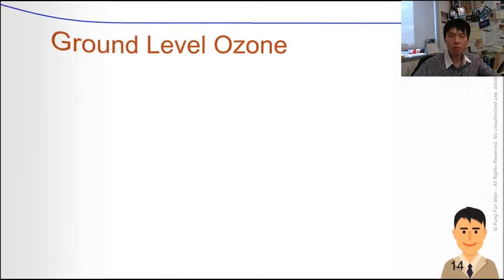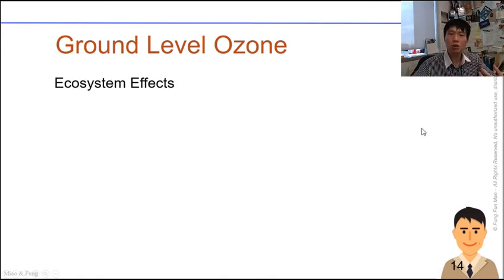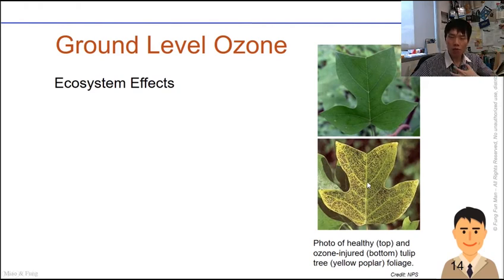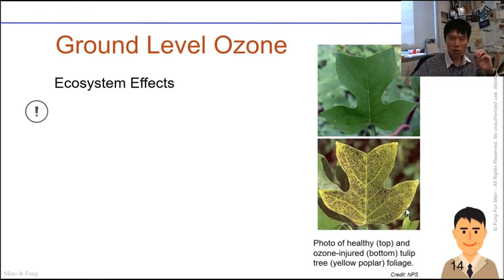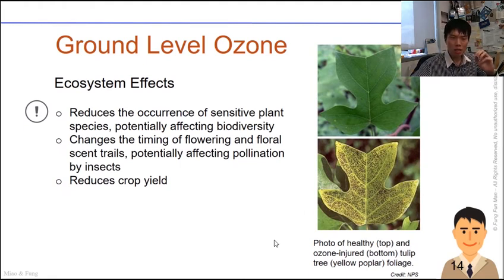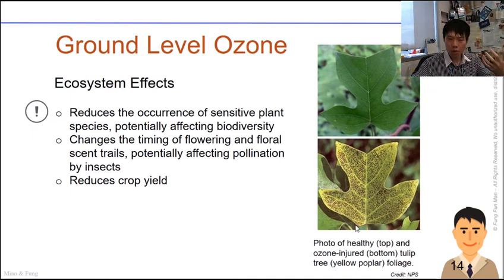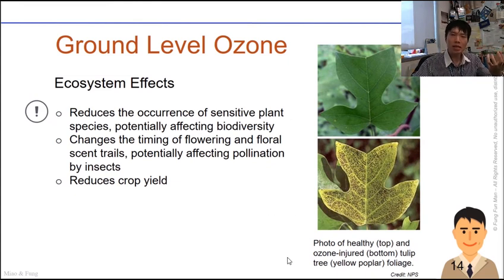Ground-level ozone also has ecosystem effects — not just on mammals but on green living plants. The top photo shows a healthy plant; the bottom photo shows the same plant after high ozone exposure — it becomes yellow with stains and marks. Ozone induces cellular stress, reduces populations of sensitive plant species, and diminishes biodiversity. The oxidative stress also changes the timing of flowering, and floral scent trails become less aromatic, affecting insect pollination and ultimately reducing crop yields.